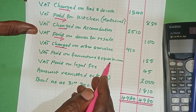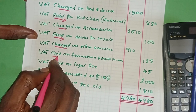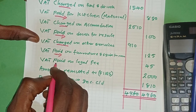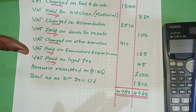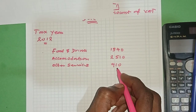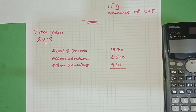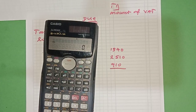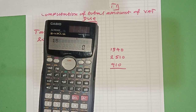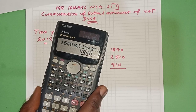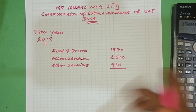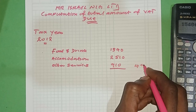VAT paid on furniture and equipment - that is input VAT. VAT paid on legal fee - that is input VAT. Now, amount remitted to FIRS - let's hold on. Let's sum up the output VAT amounts: 1,540 plus 2,510 plus 910. This gives you 4,960. So your total output VAT is 4,960.